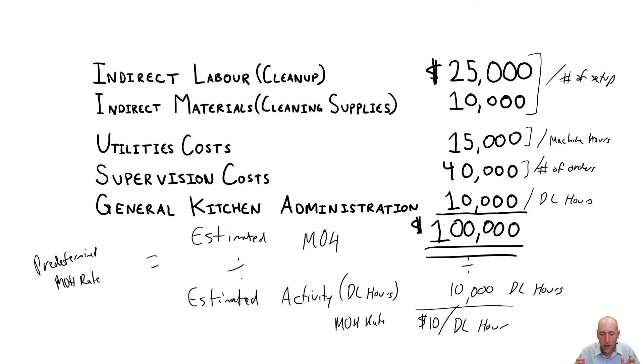So with a traditional costing system, you just use one overhead rate and you say, okay, this is an educated guess. I know it's not going to be perfect, but it'll be hopefully close enough. Some companies find it's never close enough. If they want to do a little better, they use activity-based costing.